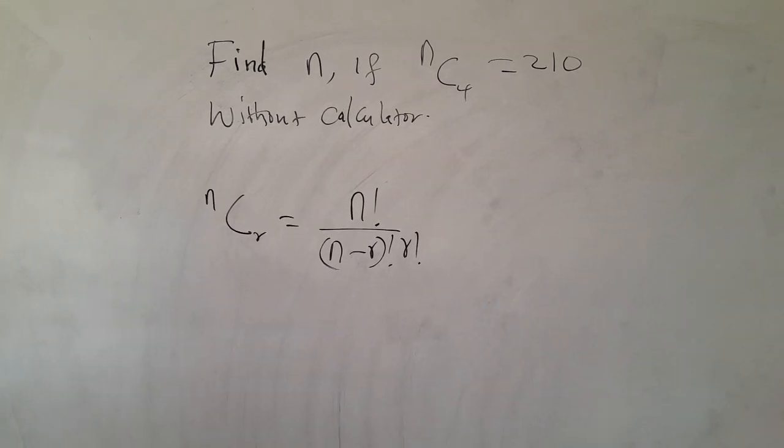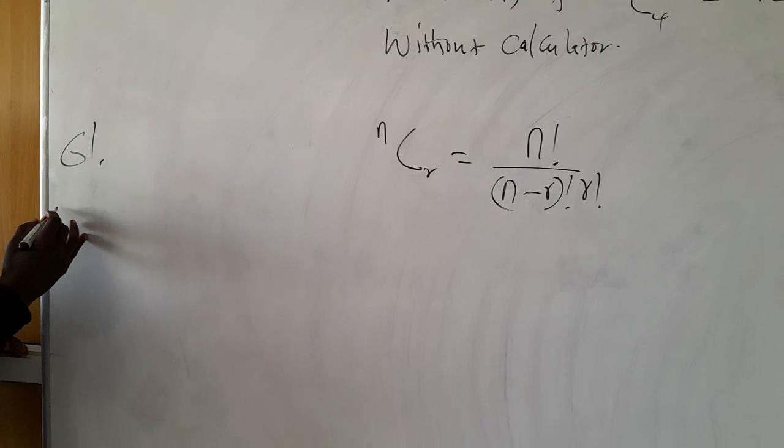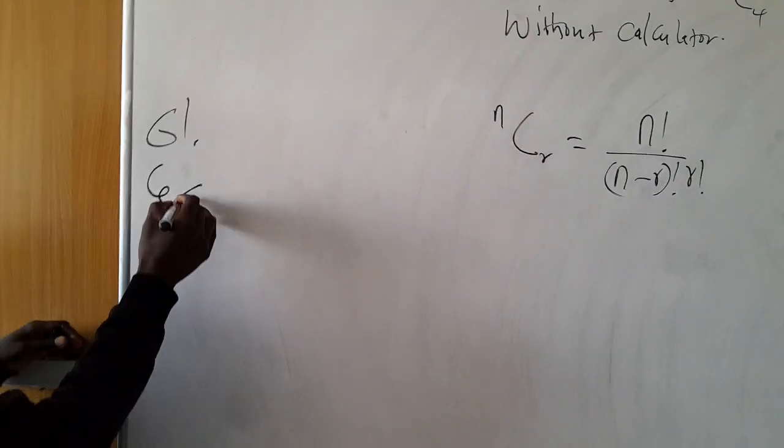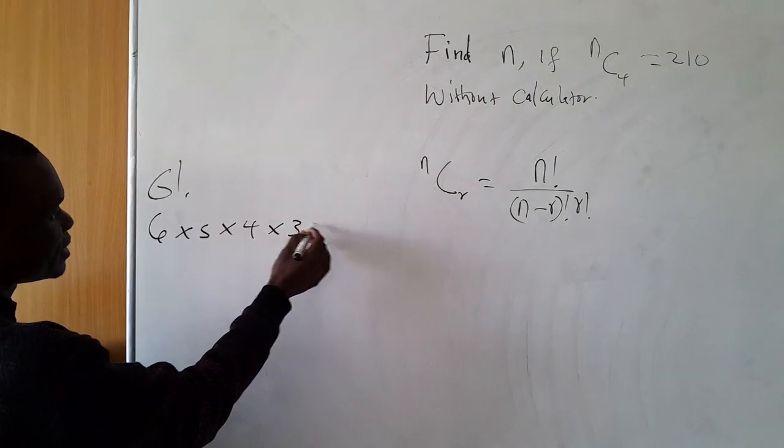Now, let's say we have 6 factorial. In the last concept, you realize that 6 times 5 times 4 times 3 times 1.